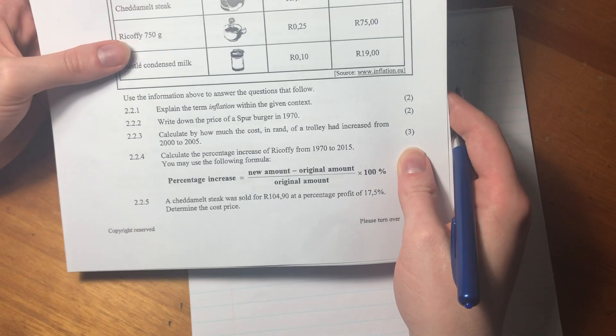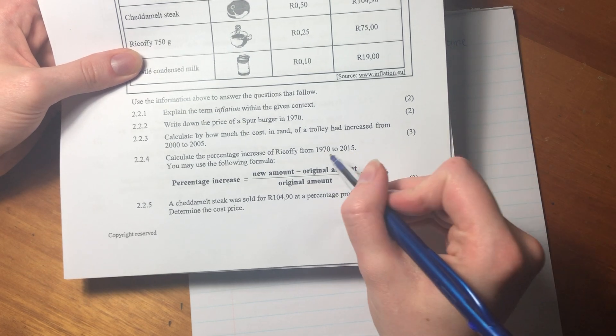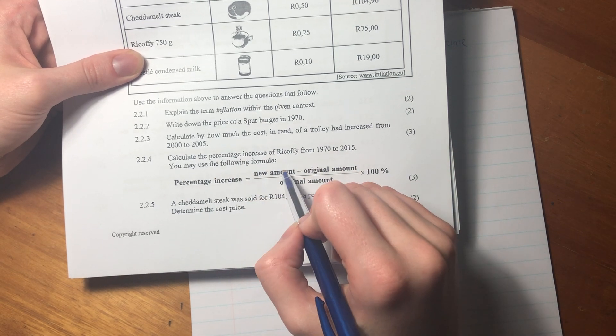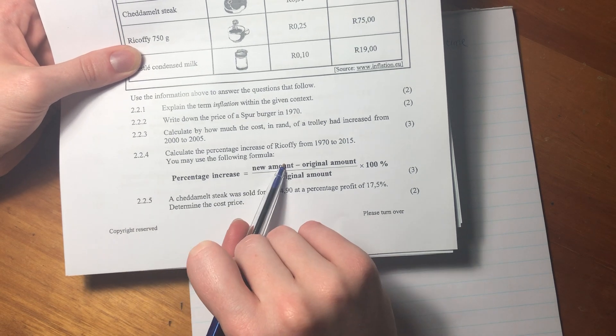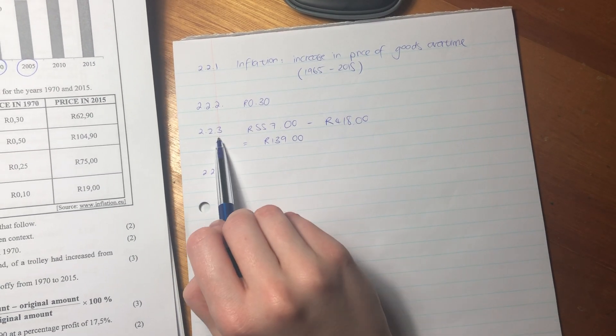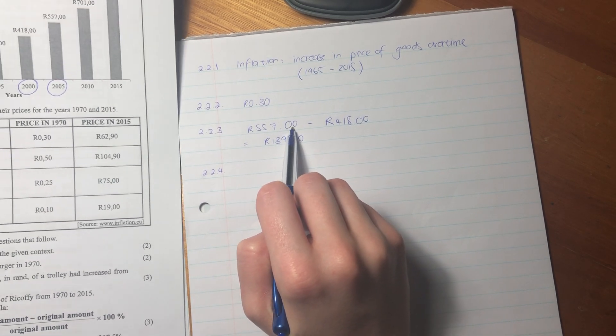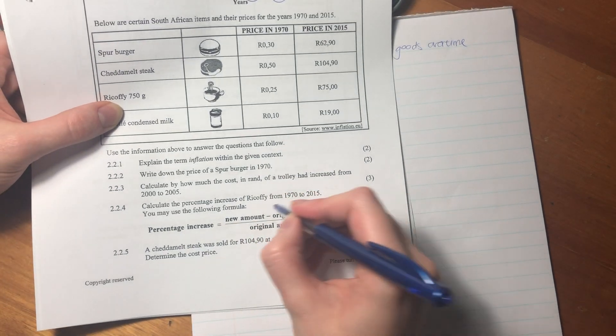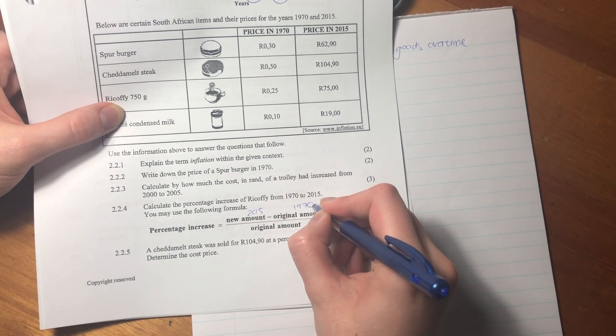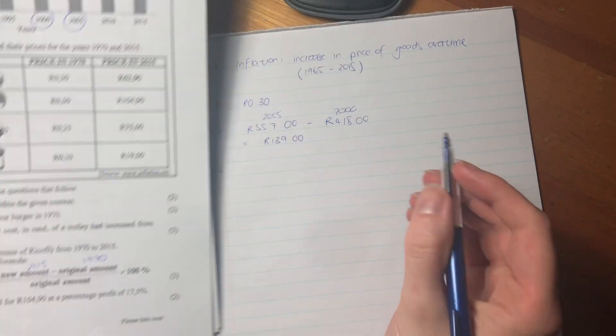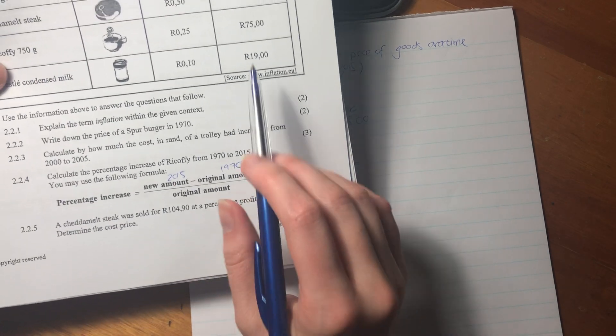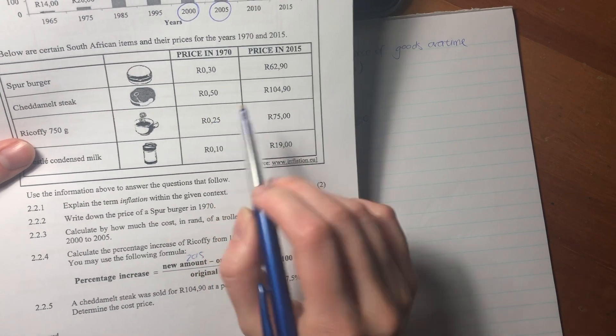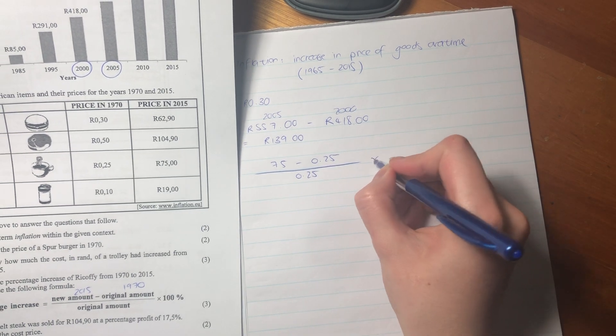So let's move on to our next question. Calculate the percentage increase of Ricoffy from 1970 to 2015. You may use the following formula. Percentage increase is the new amount minus the original amount, like we did for 2.2.3. The newest was the most recent amount, which is 2005, minus 2000. So that's what we're going to do here, except the new amount is 2015, and the original amount is 1970, over the original amount times by 100. So the new amount in 2015 was 75 RAND, minus 0.25 in 1970, over 0.25 times by 100.